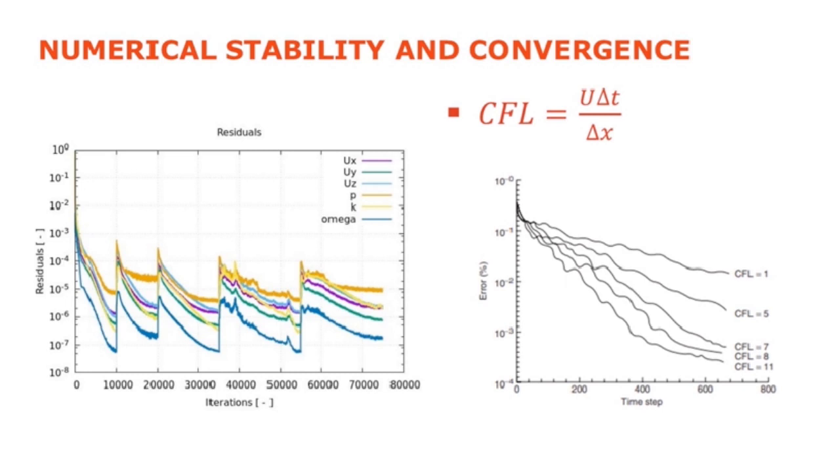However, if we're using an implicit formulation, then there are no strict CFL conditions. However, we still need to use a time step size that will physically represent the system and ensure we allow the solver to converge each iteration. And in most cases, this will be significantly more than if we were using the explicit solver, since the solver is inherently more stable.